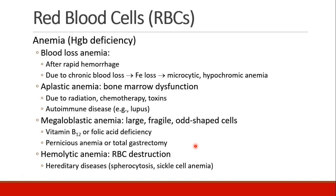Megaloblastic anemia creates large, fragile, odd-shaped red blood cells, often due to vitamin B12 or folic acid deficiency. It can also occur in pernicious anemia or in patients who've had a total gastrectomy, since cells in the stomach are responsible for management of vitamin B12. Hemolytic anemia is due to destruction of red blood cells, and can occur in hereditary diseases like sickle cell anemia or spherocytosis, as well as from certain implanted devices.